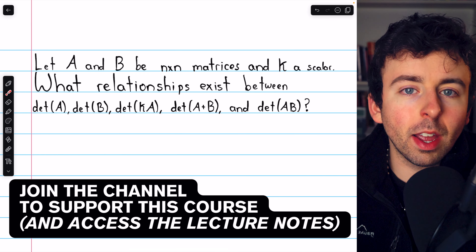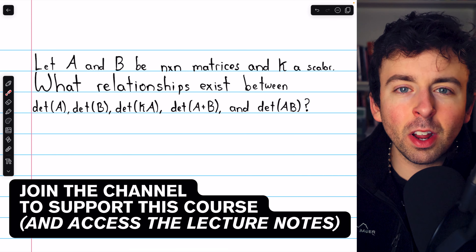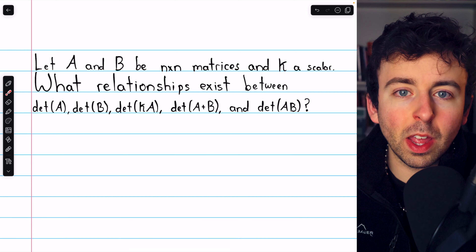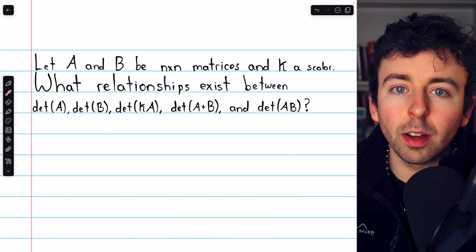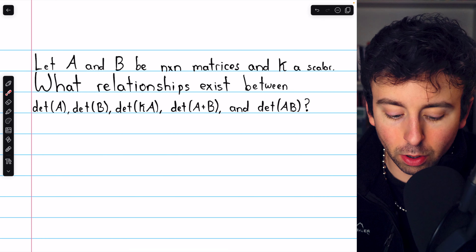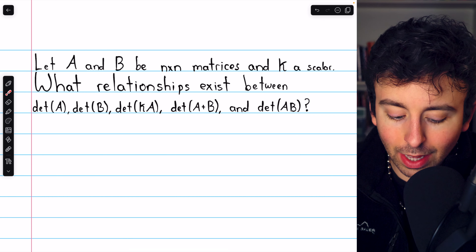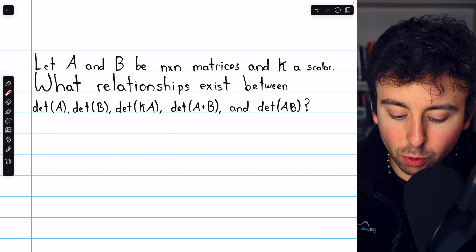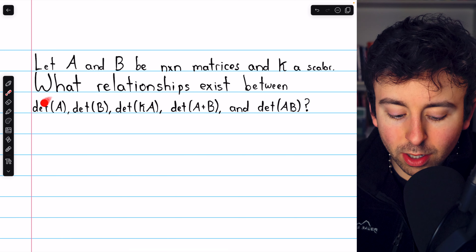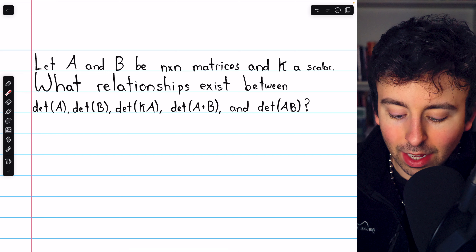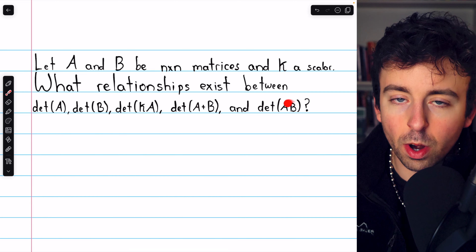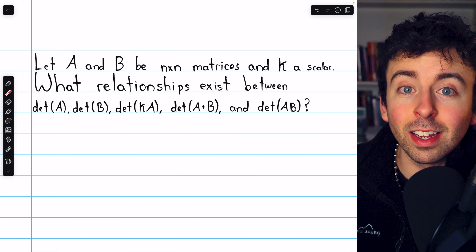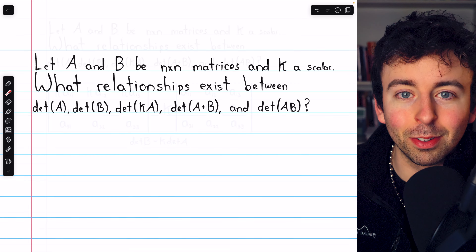At this point, we've spent a decent amount of time discussing determinants, and they're not super easy to calculate, so it would be nice to know if there are some useful properties of determinants. In particular, we might ask if there's any relationship between the determinant of a matrix and that matrix times a scalar, or the determinant of two matrices and the determinant of their sum or their product. In this video, we'll look at these situations and see some surprising and perhaps not-so-surprising results.